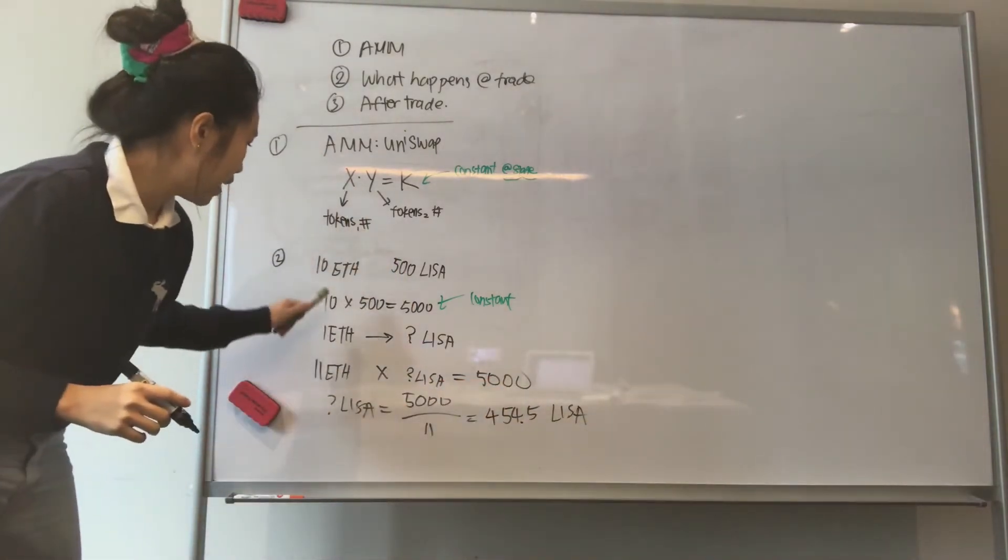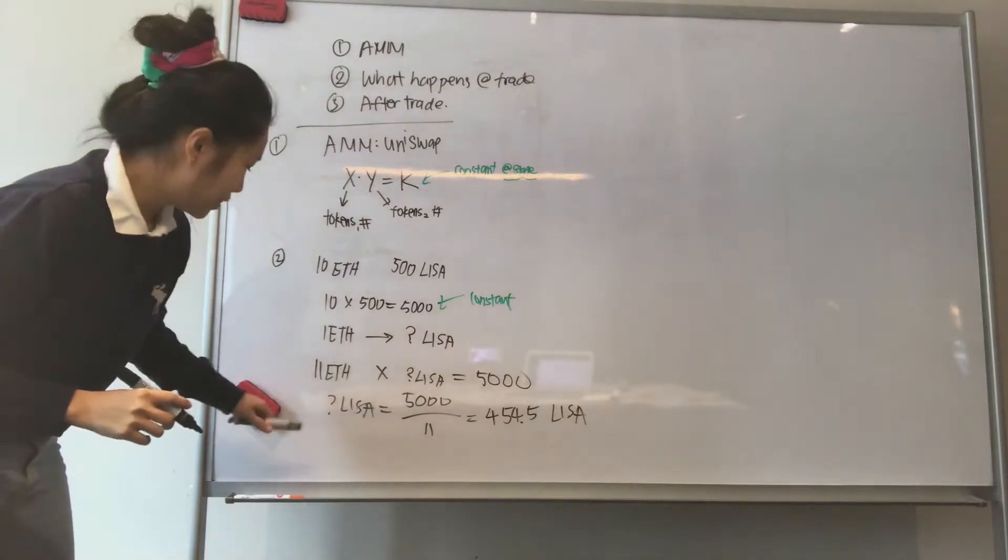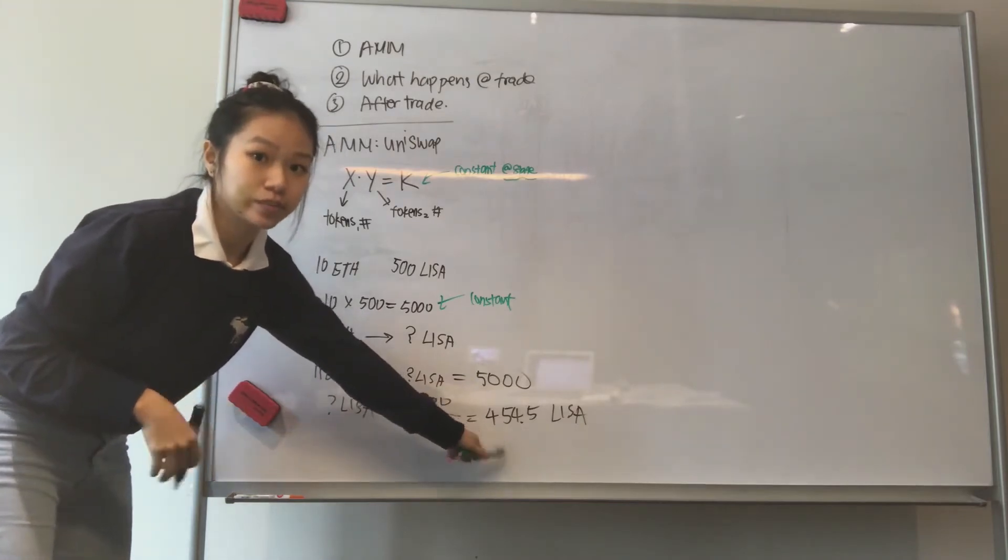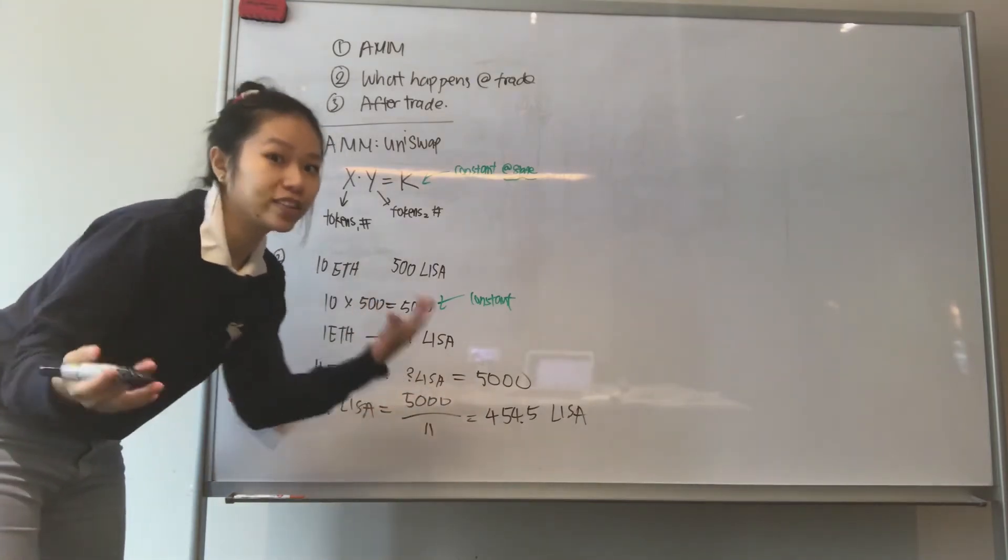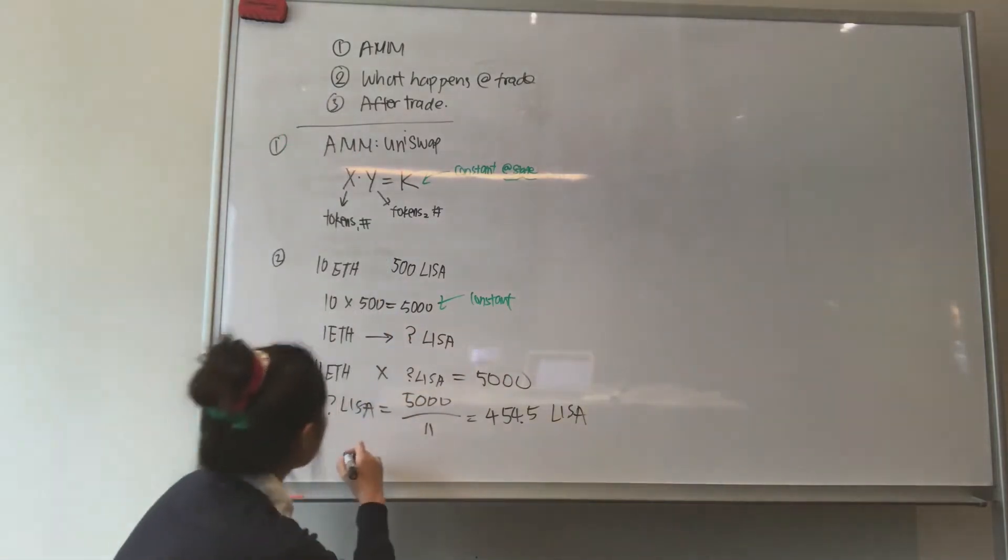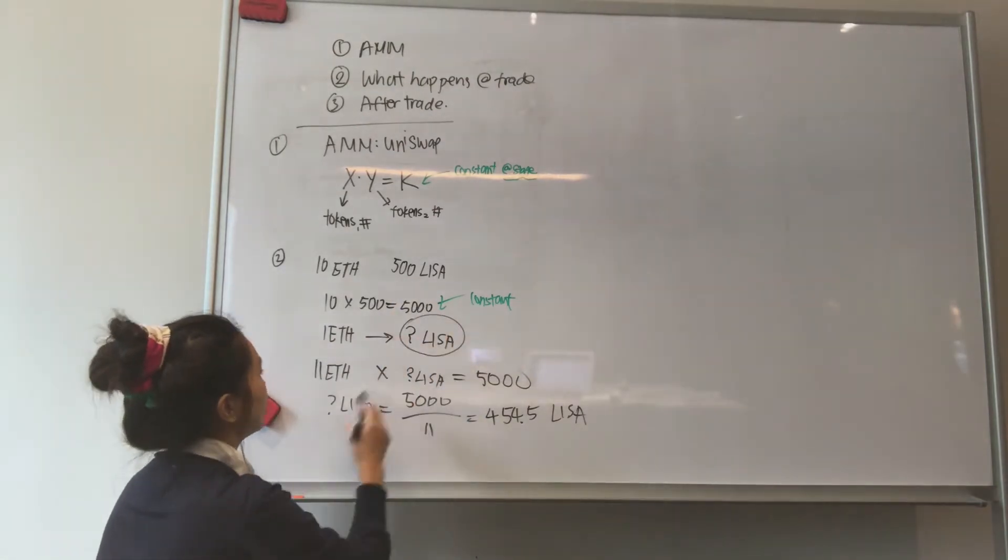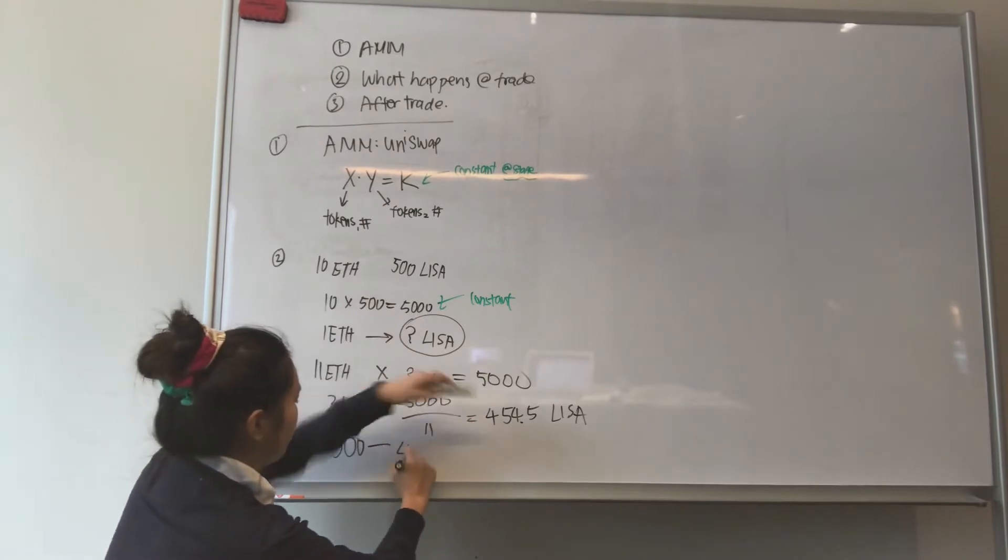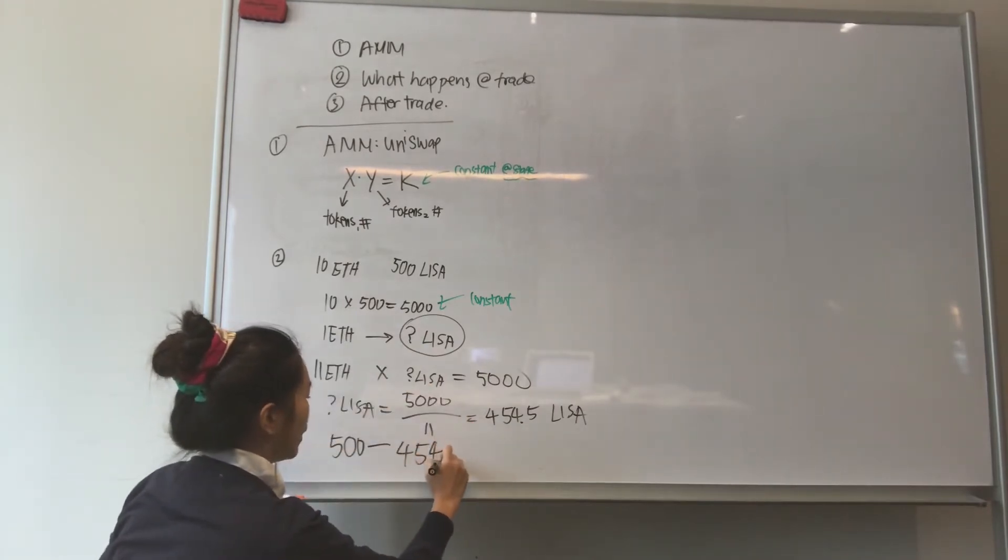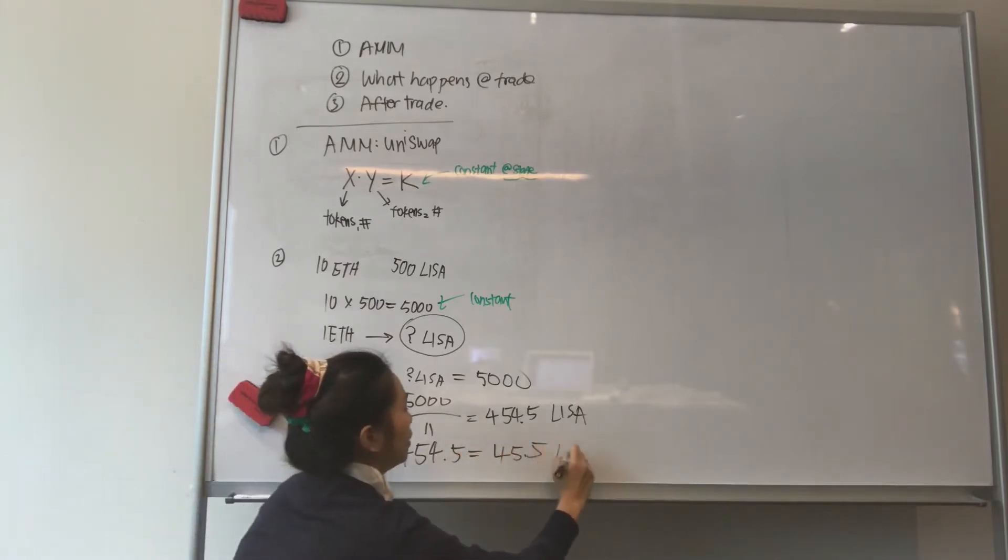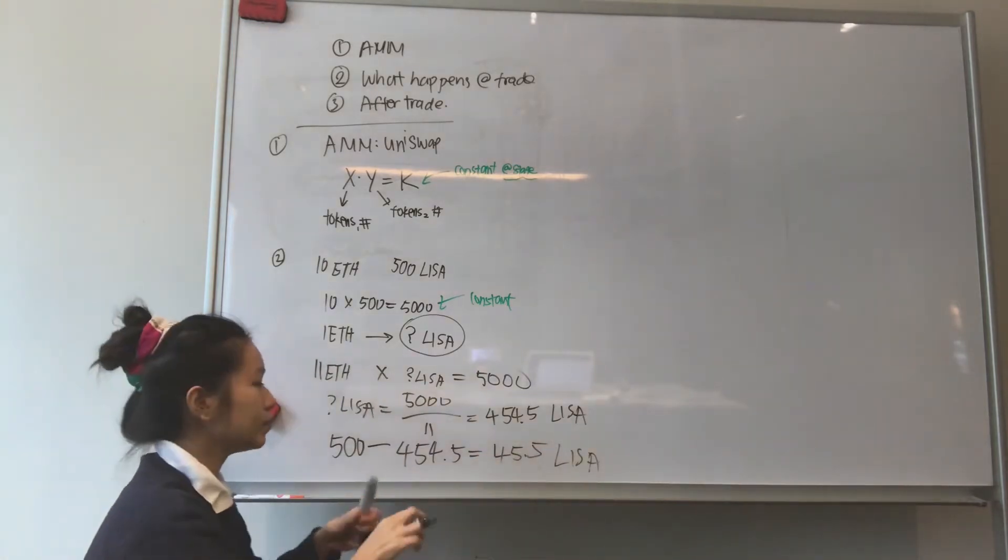This means that at the end of this transaction, there will be 11 ETH in there and 545.5 LISA tokens. And what happens to the remaining? Well, that's what you do. The whole thing about exchange is that you give something to take something out, right? So you give 1 ETH and how much LISA tokens are you getting out? So this amount over here is 500 LISA tokens minus this 454.5 tokens and you withdraw 45.5 LISA tokens. Understand? So it's quite simple.